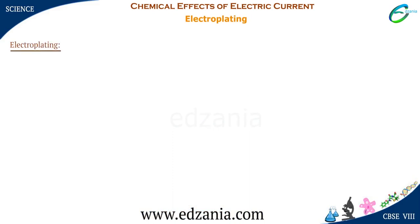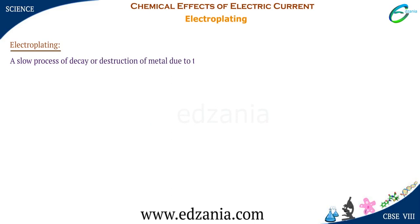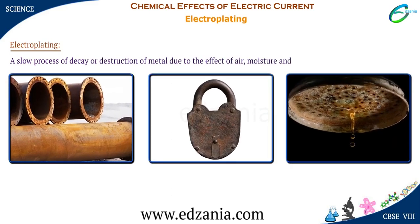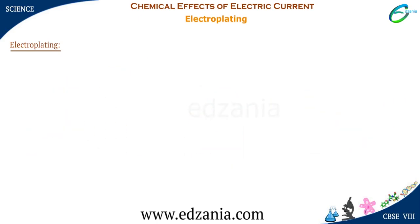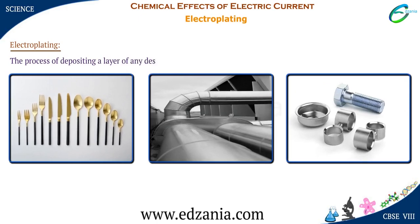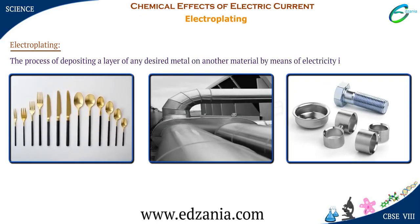Electroplating. Have you heard of corrosion? Corrosion is a slow process of decay or destruction of metal due to the effect of air, moisture and acids. Preventing corrosion can save money and accidents. In order to prevent corrosion, electroplating is used. Electroplating is a process of coating a metal by another metallic material in an electrochemical bath by using the process of electrolysis. Electroplating makes the surface of various objects clean, smooth and shiny.